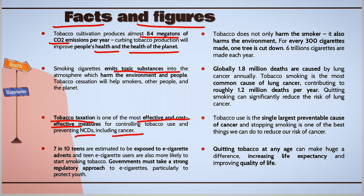It is found that out of 10 teens, 7 teenagers are exposed to using e-cigarettes, and they can turn to start smoking tobacco, which is a harmful form of tobacco. The government must take a strong regulatory approach against the use of e-cigarettes, and ultimately by this we can protect youth from using harmful forms of tobacco.